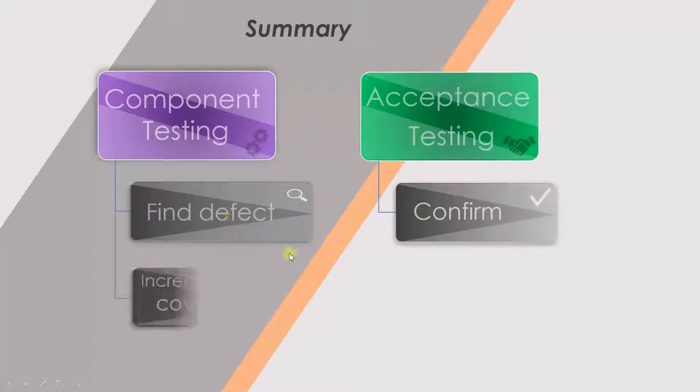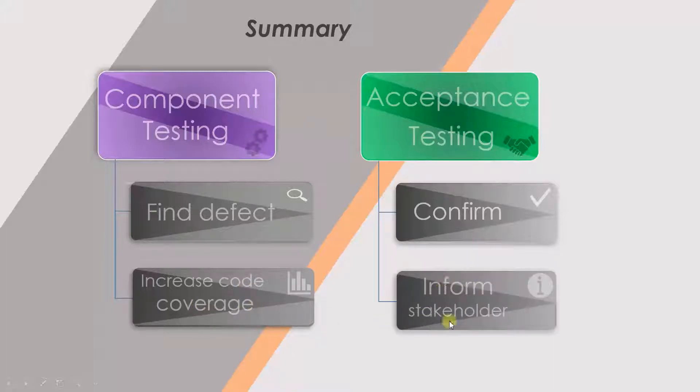The second point is that with component testing, we try to increase the code coverage, while with acceptance testing, we gather the information and give it to the stakeholder.